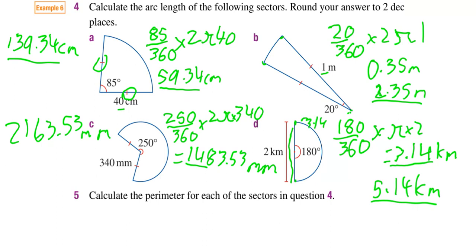That's how you do arc length of the following sectors and the perimeter of those sectors. Just let me know if you've got any queries about what I've just spoken about.